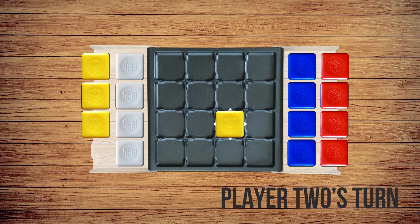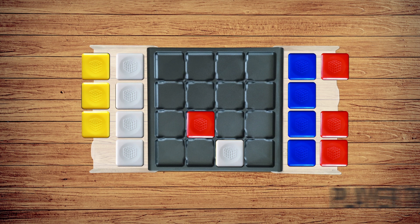After flipping, Player 2 then places a tile of their own on any vacant square. From now on, players alternate, flipping an opponent's tile if possible, then placing a tile of their own.